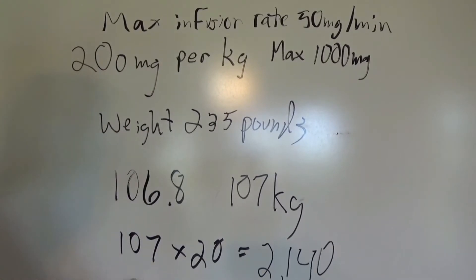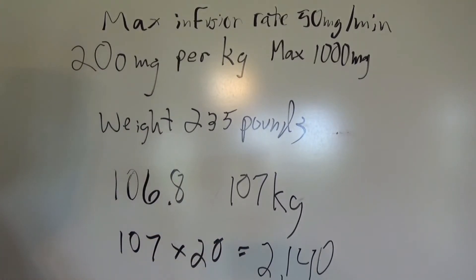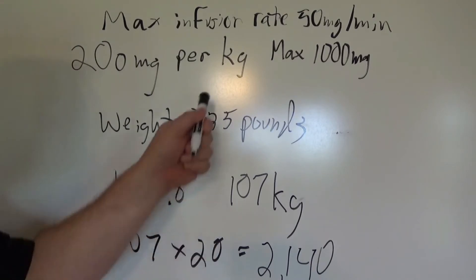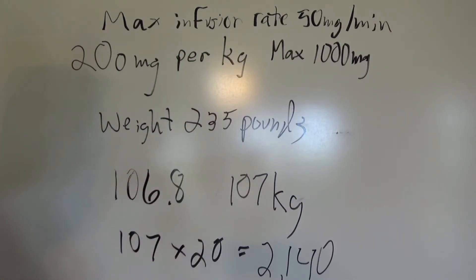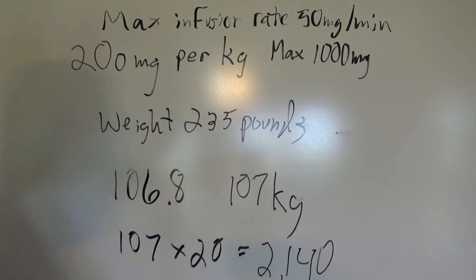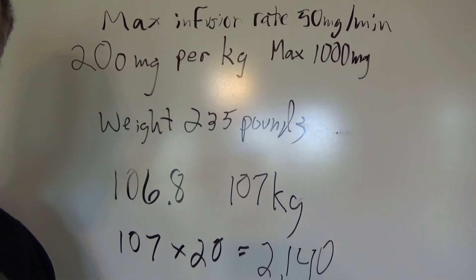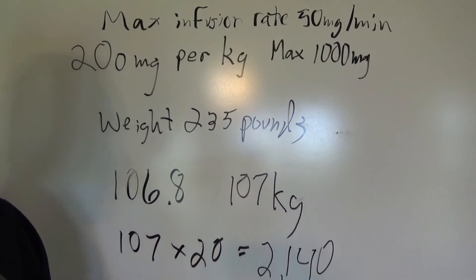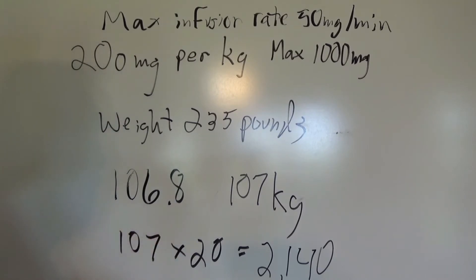We're trying to give 1000 milligrams — we took his weight, figured out how much he gets, and it was way over the 1000 max. So we've got to give 1000 milligrams. We have a concentration of 1000 milligrams in 100 milliliters. So how much do we have to give total? 100 milliliters — the entire bag we just mixed up with 1000 milligrams in it. That's the bag we have to give.